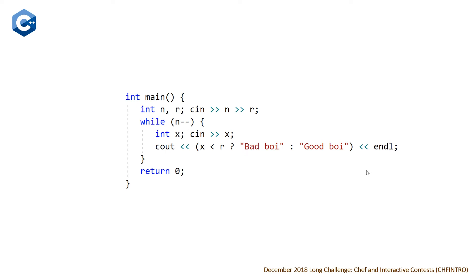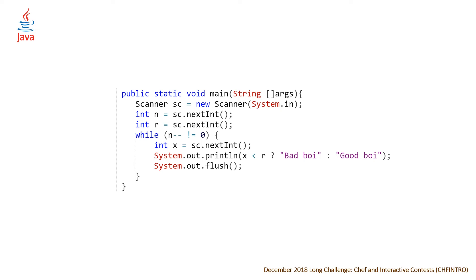C++ is actually the nicest of all these because you don't need to do anything extra other than making sure you're using endl rather than the backslash n. Looking at our Java solution — a little more verbose but basically the same thing — reading in integers n and r, looping through all n contestants, reading in x, comparing x to r, and then we have this extra line where we flush our system with System.out.flush().